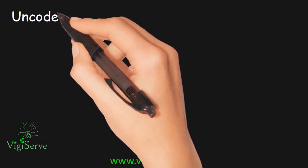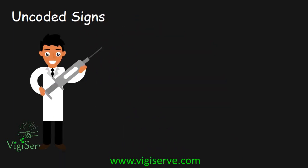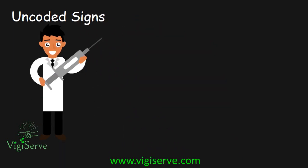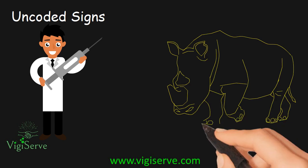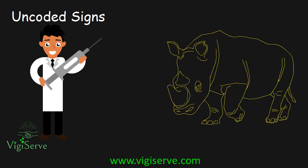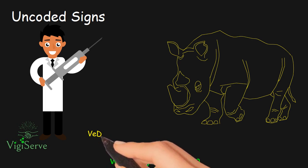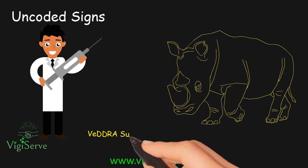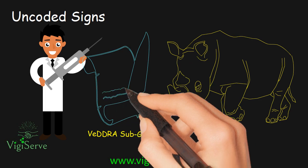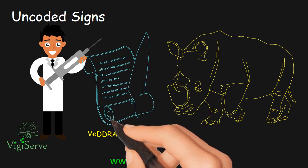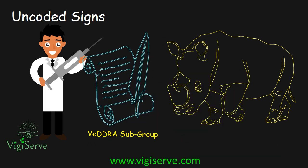Concept of uncoded signs in VEDRA. The LLT 'uncoded sign' should only be used when there is no existing VEDRA term to code the clinical signs that have been observed. Further detail relating to the clinical signs should be explained in the narrative of the report. Where appropriate, a proposal for a new VEDRA term should be submitted to the VEDRA subgroup for consideration at their next annual review, using the templates available in the call for comments.